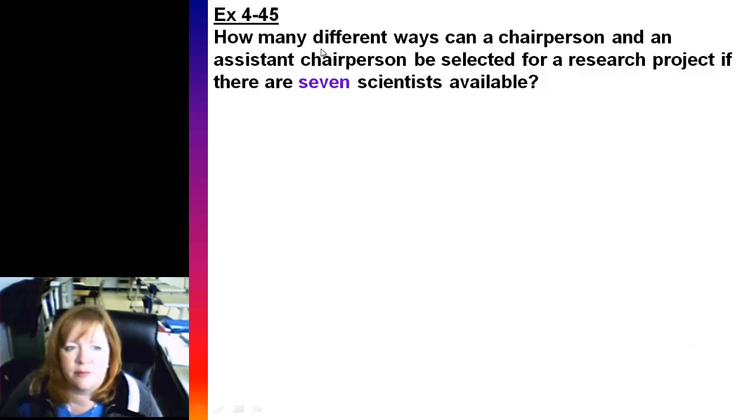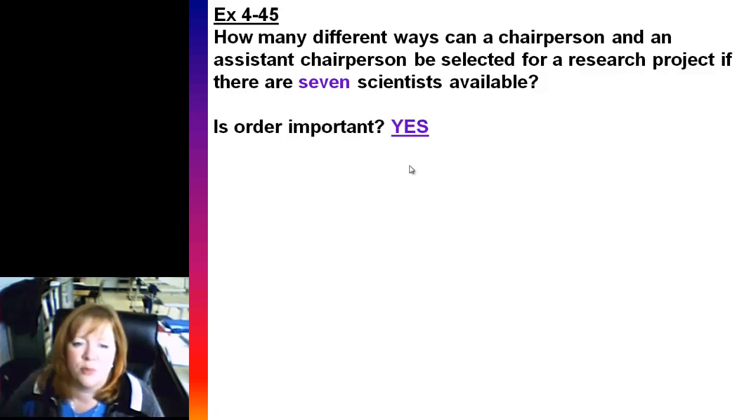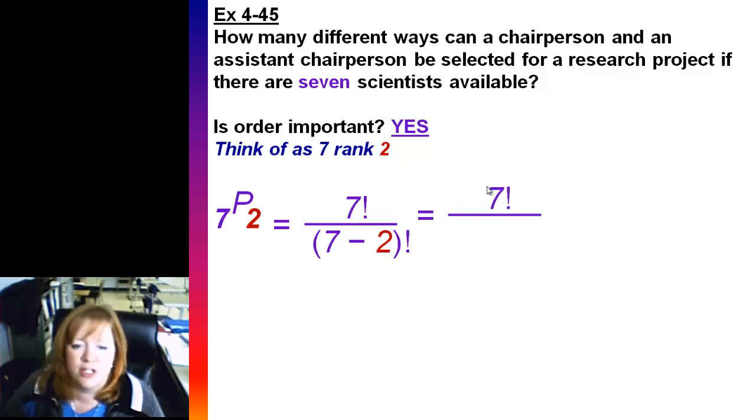Next one. How many different ways can a chairperson and an assistant chairperson be selected for a research project if there are seven scientists available? You're looking for a chairperson and an assistant chairperson. So it's seven, and you're ranking two people. So is order important? Yes. Chairperson and assistant chairperson, totally different jobs. And you can think of it as seven rank two. So we're going to use our permutation rule. Put in the seven and the two where they go. So it's seven factorial over five factorial. And you'd end up with 42.